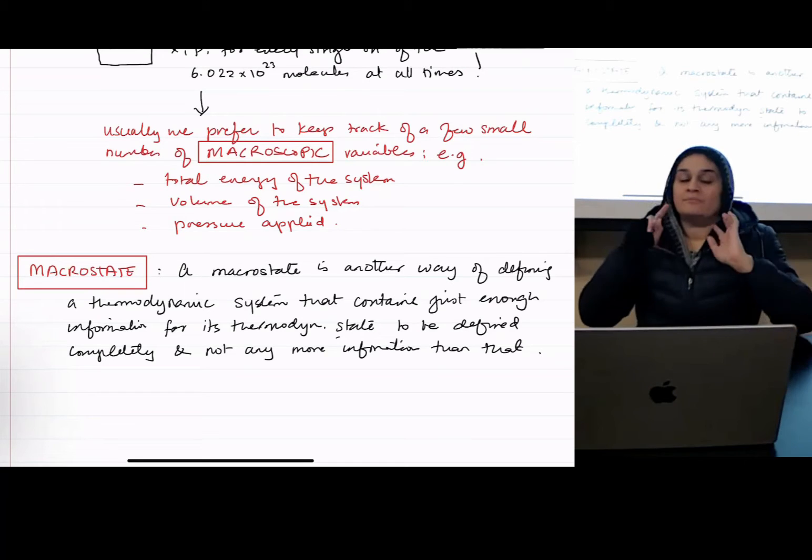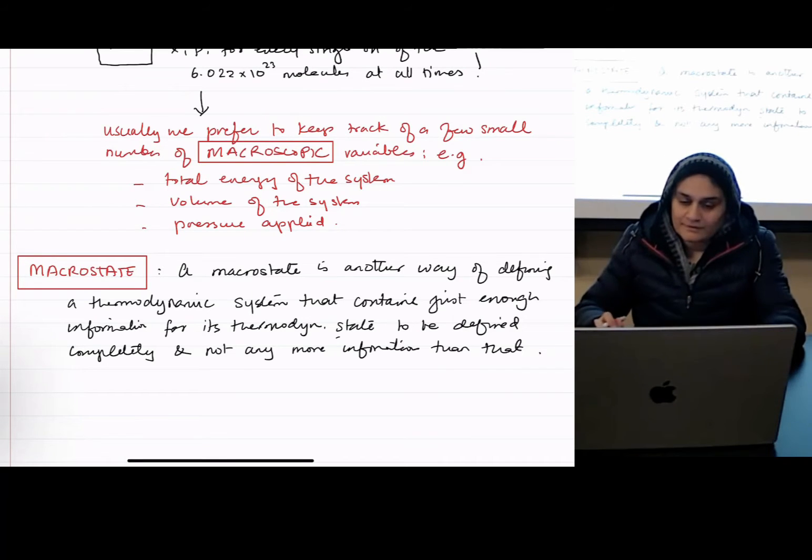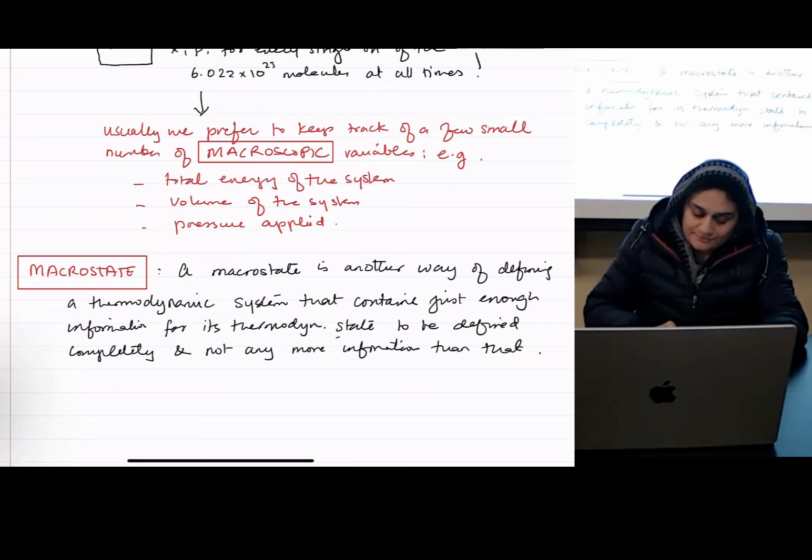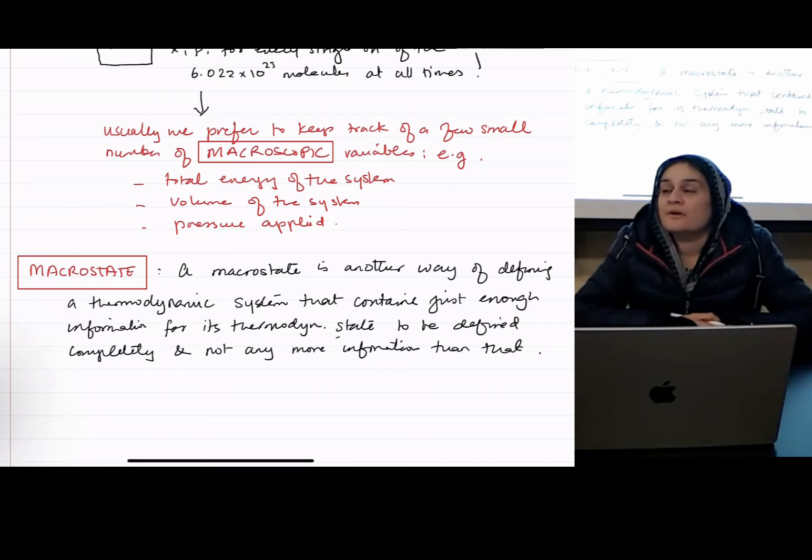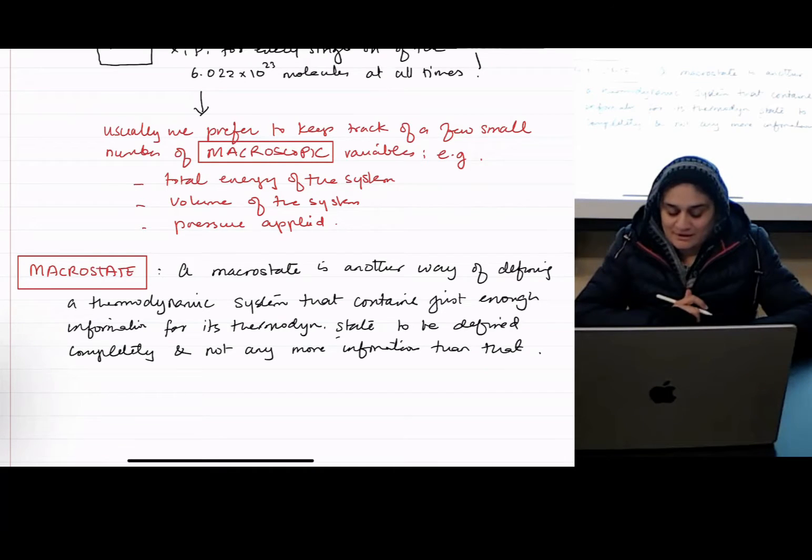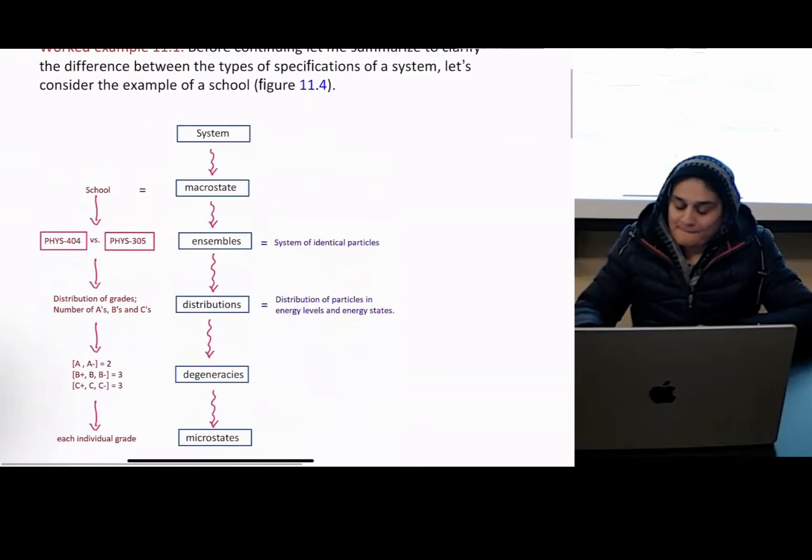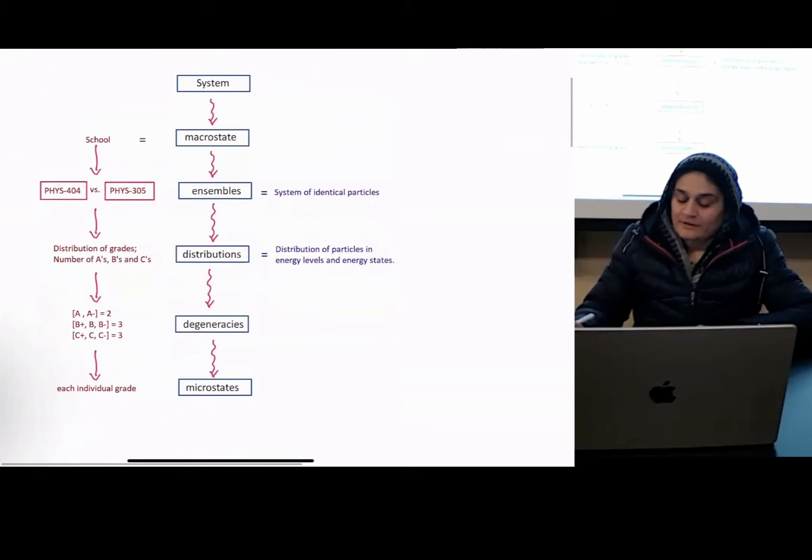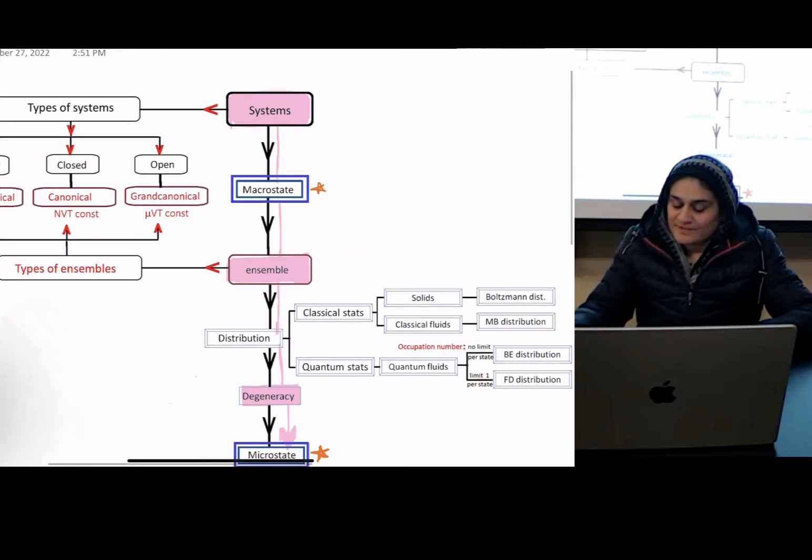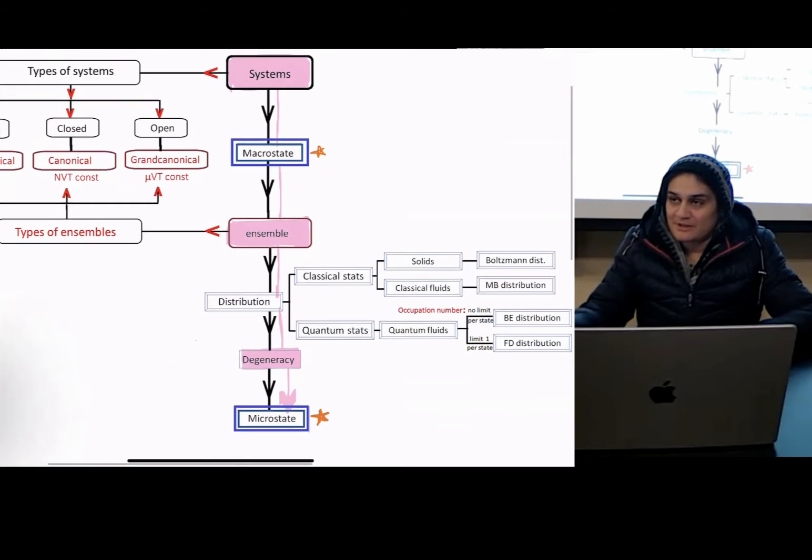So now let me give you an example. Everybody write that down. Remember this picture that I was showing you? The systems, the microstate, the ensembles, the distribution, the degeneracy, and the microstate.